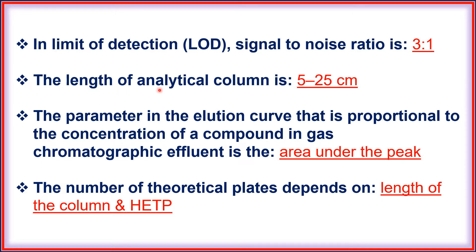The length of an analytical column is 5 to 25 cm. The parameter in the elution curve that is proportional to the concentration of a compound in gas chromatographic effluent is the area under the peak.